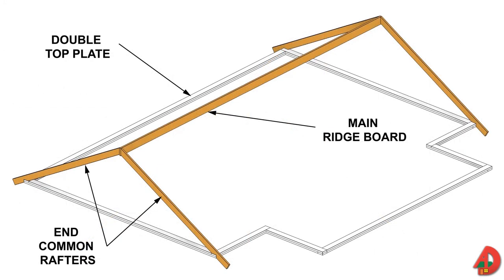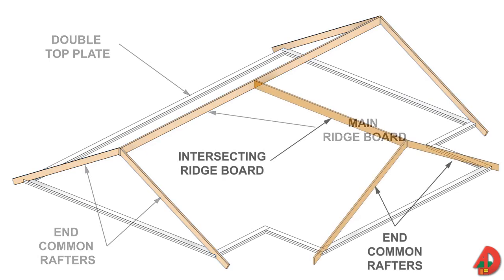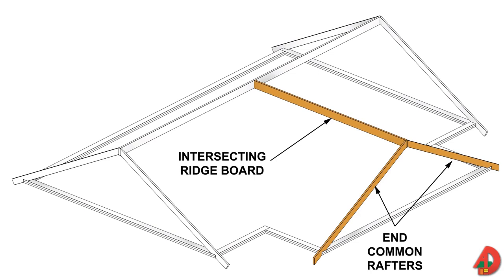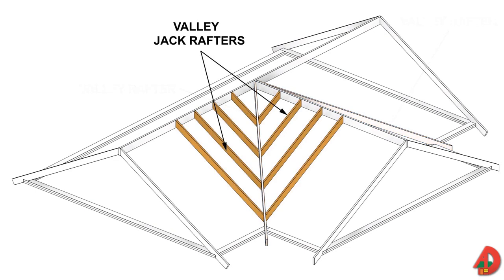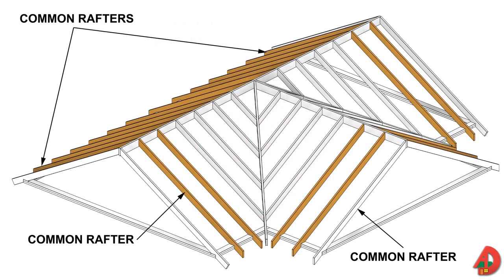The following is an example for framing an intersecting roof with equal spans where both sections are gable roofs: install the main ridge board and four supporting end common rafters; install the intersecting ridge board, nailing its intersecting end to the main ridge board and installing two end common rafters at the end of the intersecting ridge board; install two valley rafters running from the main ridge board to the inside building corners; install valley jack rafters; install remaining common rafters.